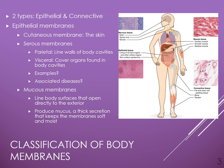Visceral serous membranes cover the organs that are found in those cavities. A good example would be the visceral membrane that covers the lungs, or that covers all of the internal organs of the abdomen, or that surrounds the heart itself.